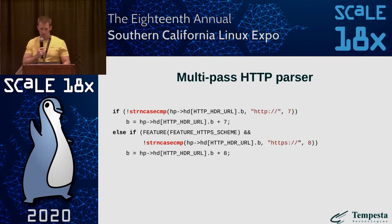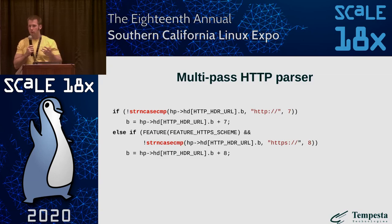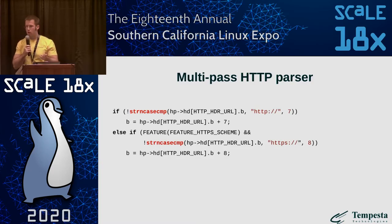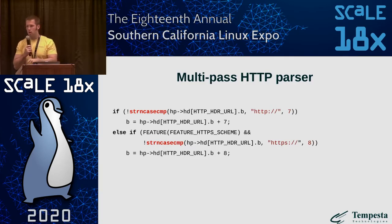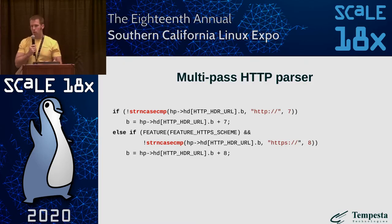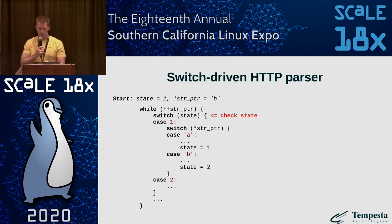The next topic is the HTTP parser. There are roughly three types of parsers. The first is the multi-pass parser — a real-life example from Varnish source code: if we have HTTPS as a target string, we first match it against HTTP, and then a second time against HTTPS. In this particular case we do two data passes instead of one. There are places where we surely need to do much more matching passes.